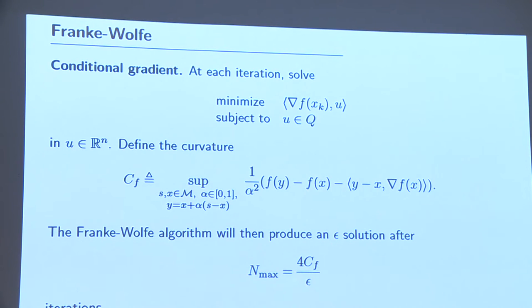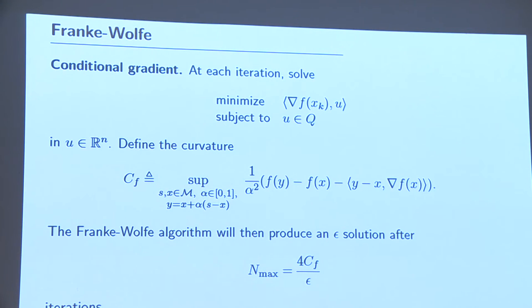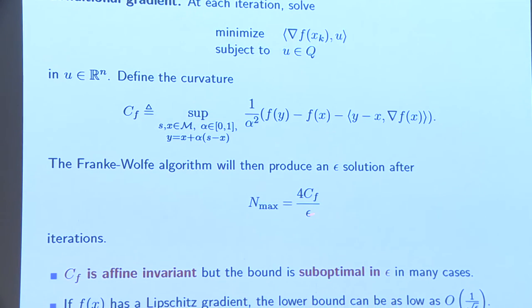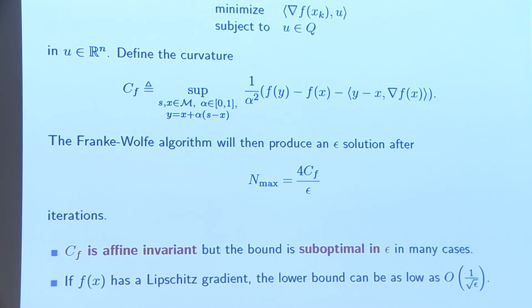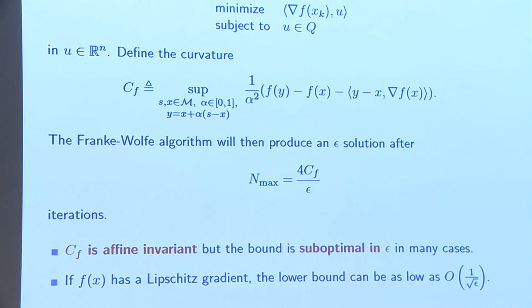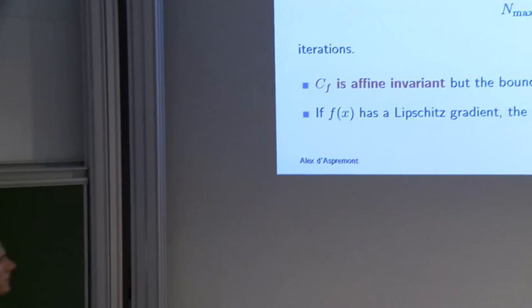Somewhat more magically, you can show that the complexity of the Frank-Wolfe algorithm is bounded by 4 times C_f divided by the target precision epsilon, where C_f is a bound on the curvature of your function. The good news is this complexity estimate is fairly simple, and additionally C_f is invariant with respect to an affine change of coordinates. The issue is that in many cases the dependence on epsilon is suboptimal — the lower bound can be as low as one over square root of epsilon, so the bound is nice but really far from being tight.